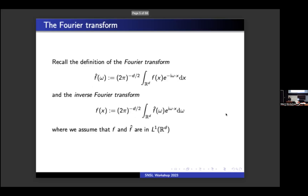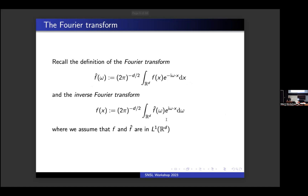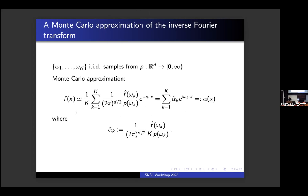To motivate the choice of this activation function, I'll recall the definition of the Fourier transform and the inverse Fourier transform. We assume that F and F-hat are in L1. What we will do is make a Monte Carlo approximation of the inverse Fourier transform, which becomes this expression. We can gather all these things together and call it alpha-hat — this gives some intuition for why we can call them amplitudes and frequencies.